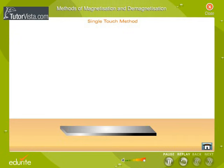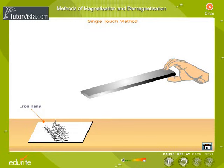Test for Magnetism. Place some iron nails on the table.